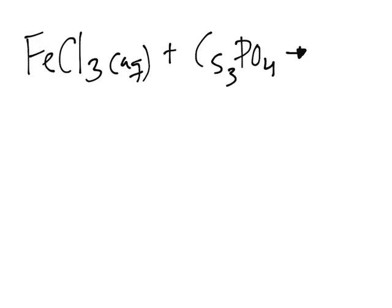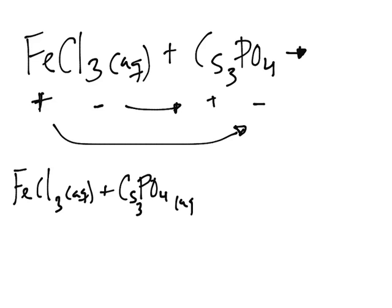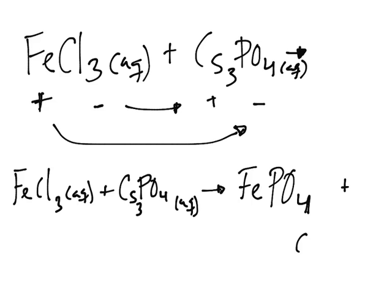Just by looking at it, we know that the cation from one compound will form a compound with the anion from the other, and vice versa. So iron will form a compound with the phosphate. Because both iron and phosphate have a charge of 3, we write nothing for the subscripts. Then we'll have the cesium and the chlorine forming the other product.